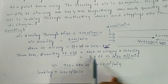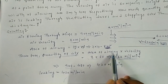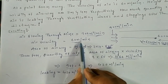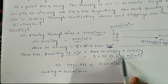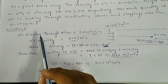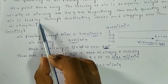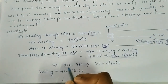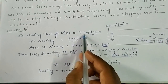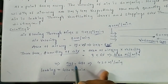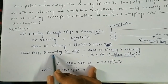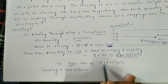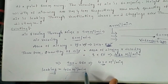The quantity of air at that point is: velocity × area = 60 × 8 = 480 cubic meters per minute. Therefore, the leakage through ventilation doors and stoppings over the distance is: 900 minus 480 = 420 cubic meters per minute.